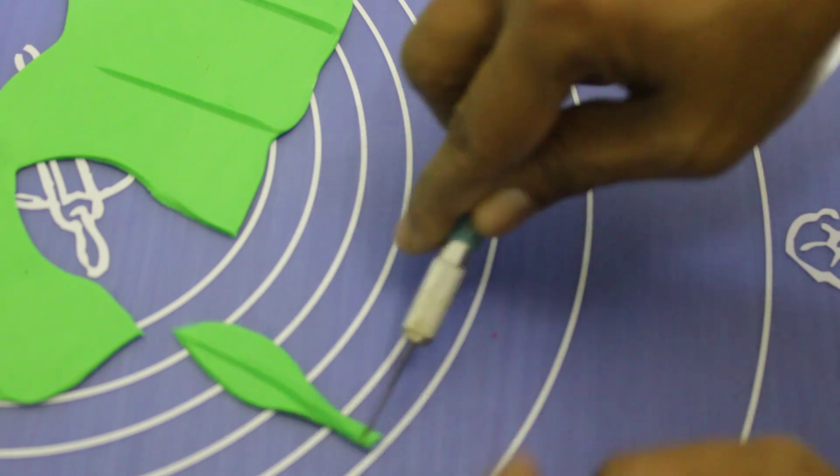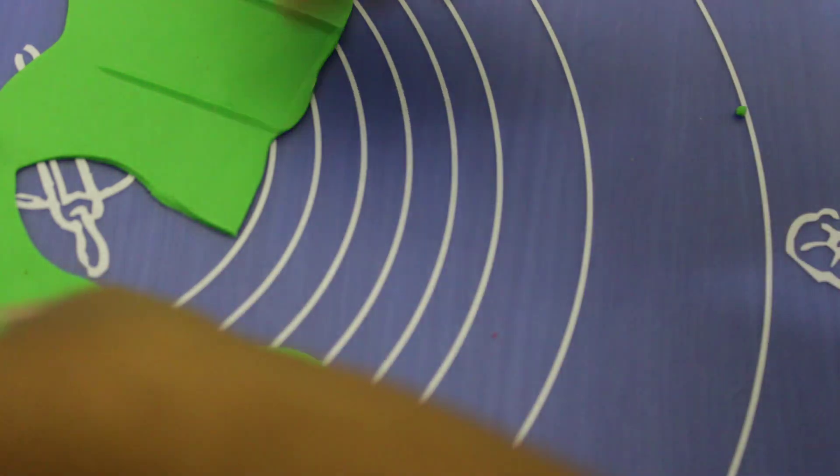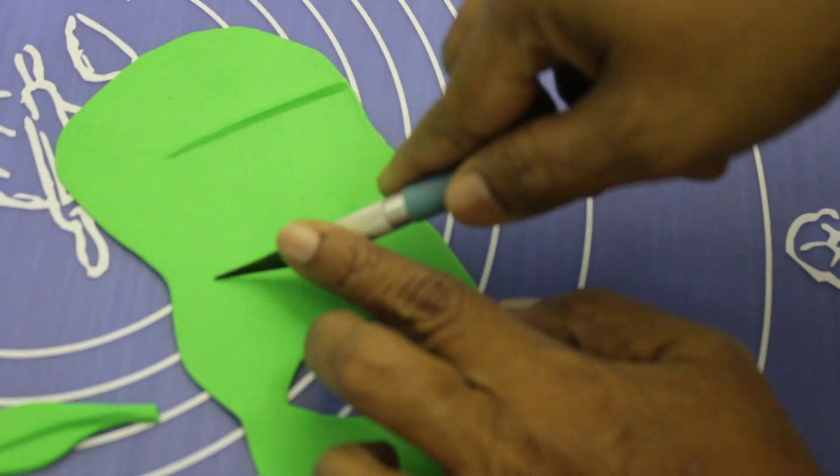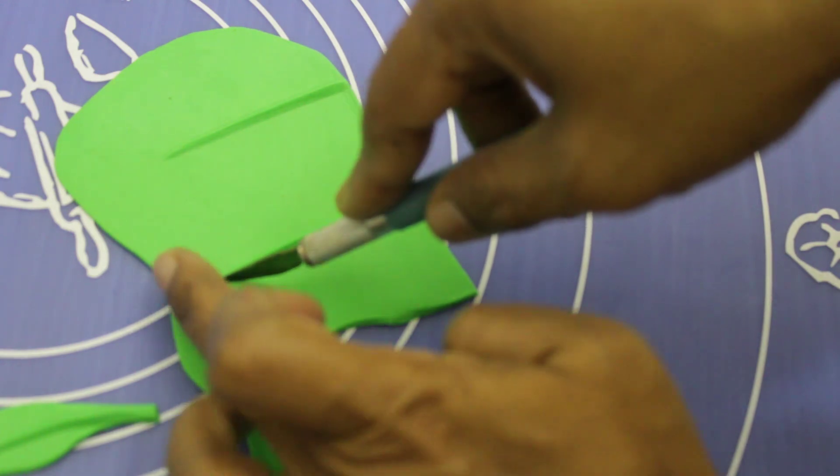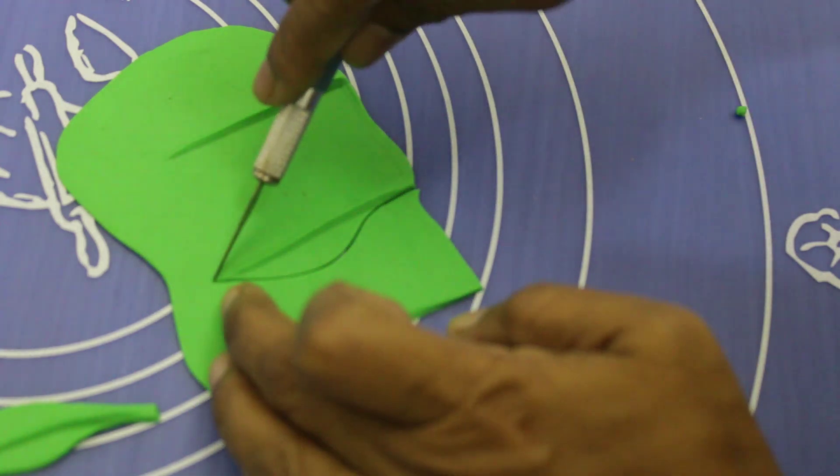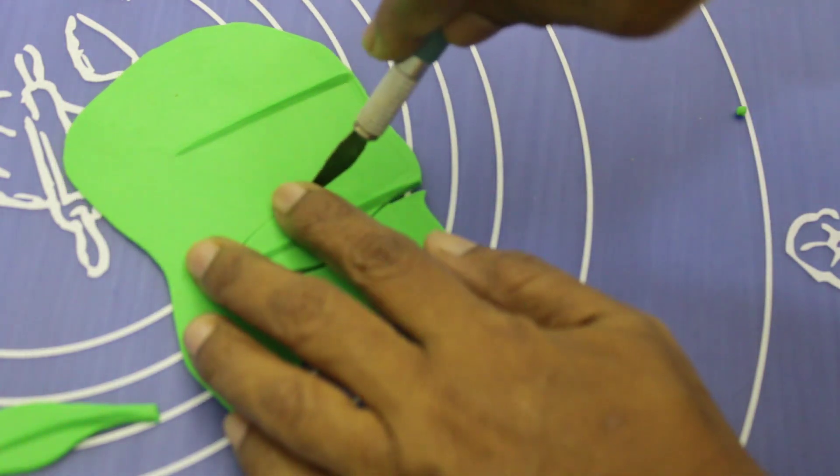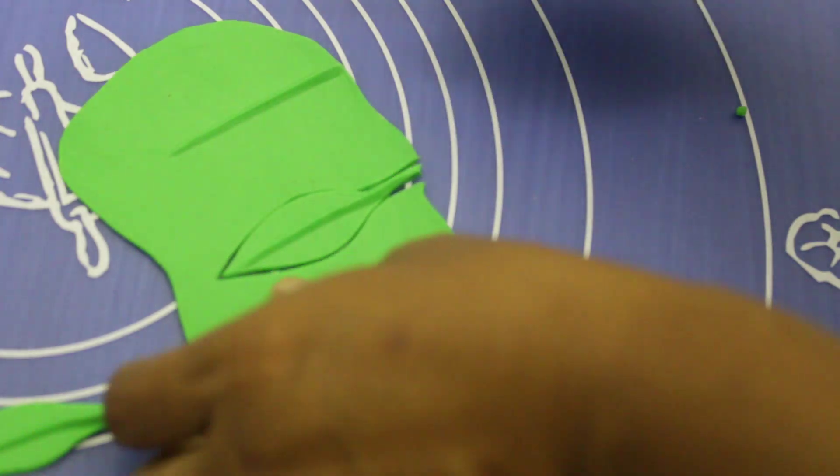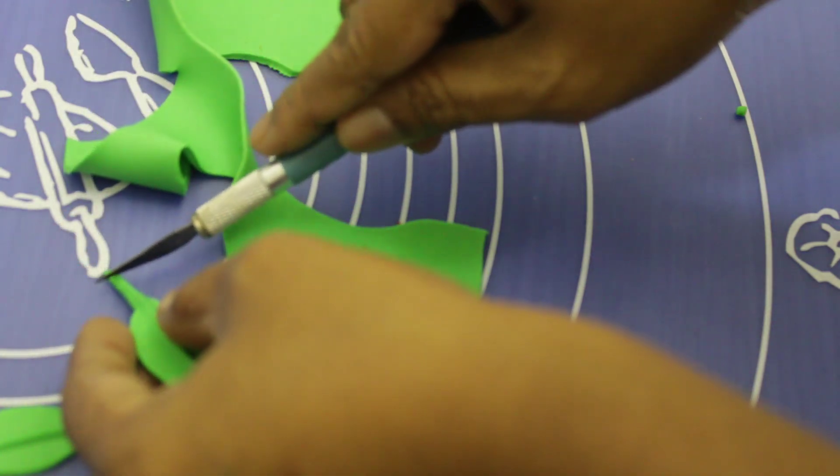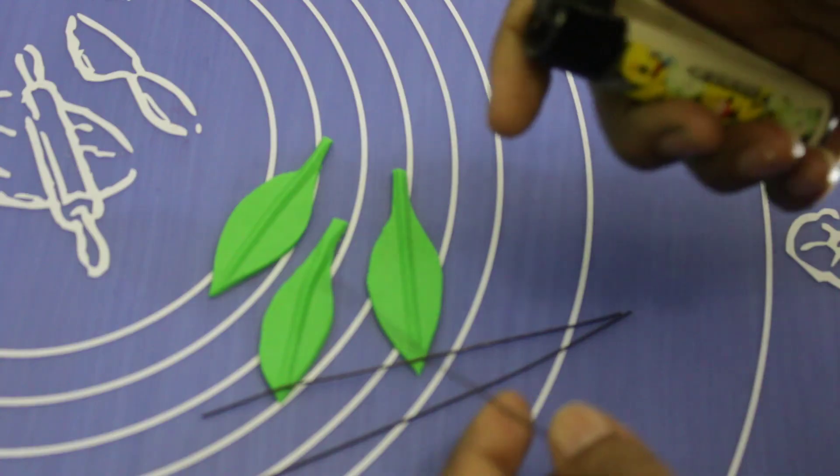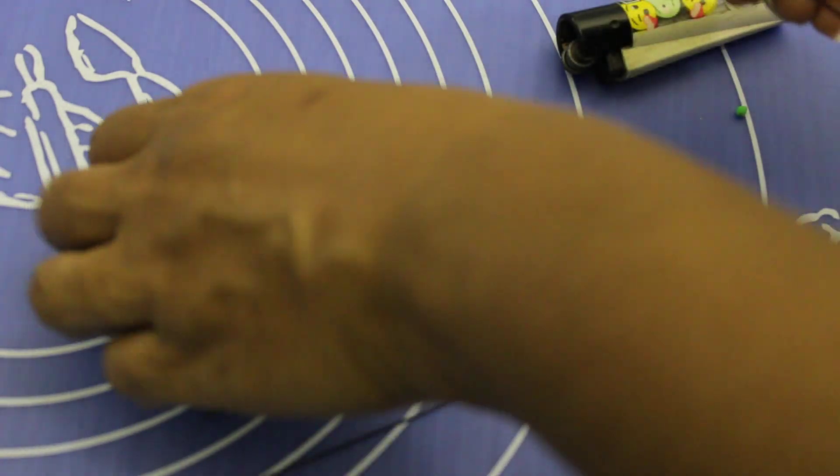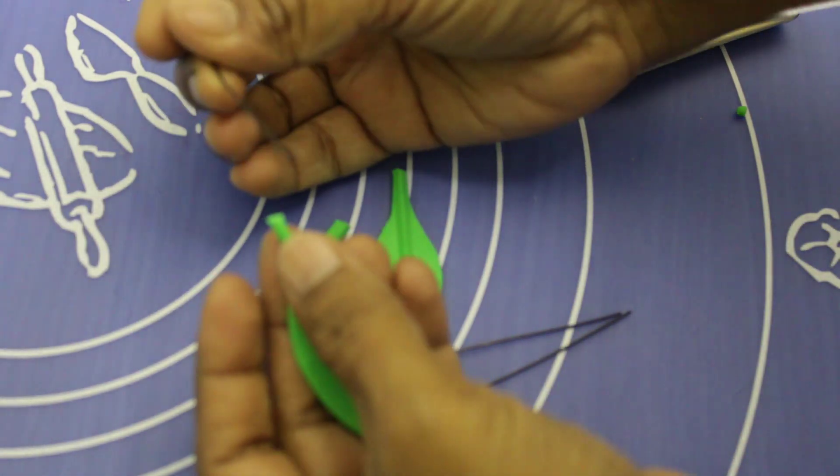So cut a little bit here and make other ones as well the same way. So you can use from here and cut it all the way like this. We want to make three of them here. Cut a little bit from this side.